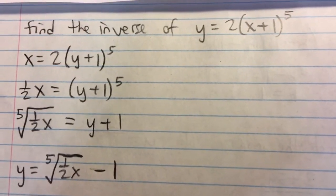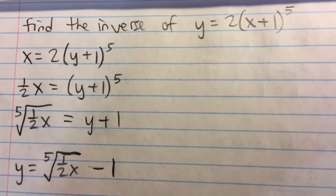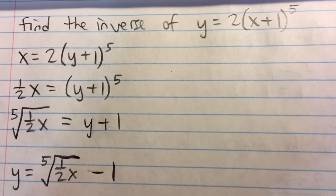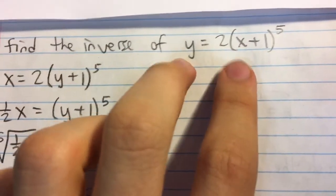Find the inverse of y equals two times x plus one, all raised to the fifth power. And so first off, to find the inverse, what we're going to do is, because remember an inverse means we switch x and y.